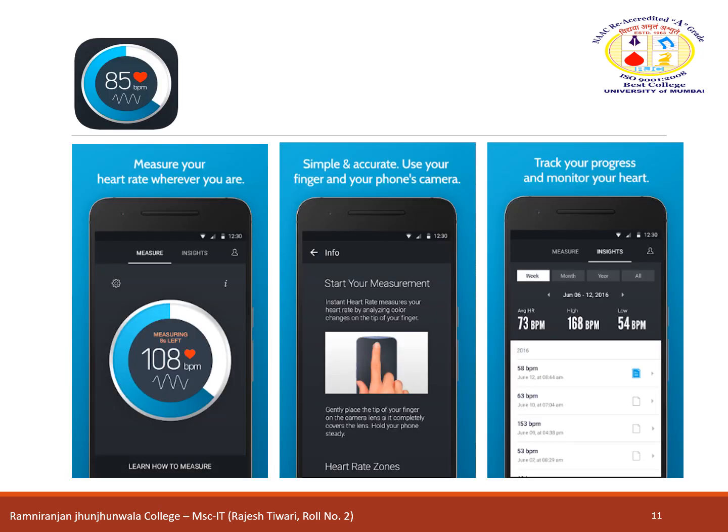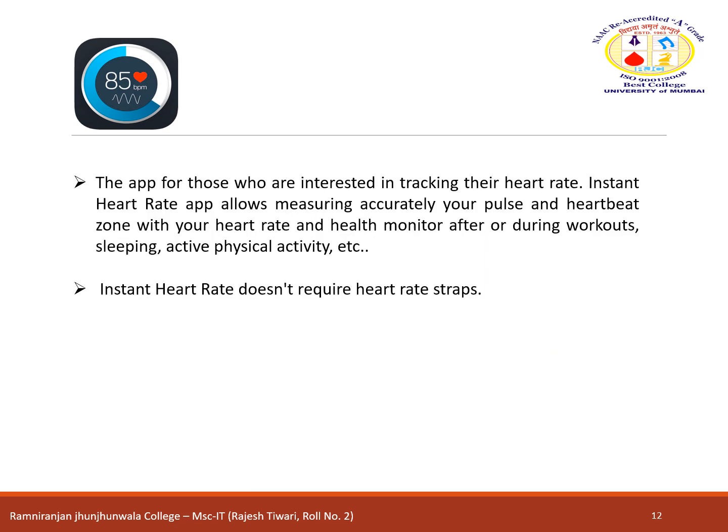The next one is the Instant Heart Rate app, for those interested in tracking their heart rate. It allows you to accurately measure your pulse and heart rate zone with your heart rate and health monitor after or during workouts, sleep, or physical activity. It doesn't require heart rate straps. Using Instant Heart Rate, you can monitor blood circulation with an accurate heart health monitor similar to ECG. This functionality is similar to pulse oximeters, detecting changes in your finger to provide accurate heartbeat measurement. The main feature is measuring your heartbeat in BPM or pulse zone accurately in 10 seconds.